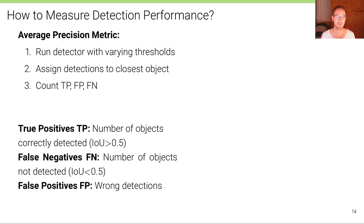And then in the third step, we count the number of true positives and false positives and false negatives. The true positives are the number of objects that are correctly detected, in other words, where the intersection over union is bigger than 0.5.